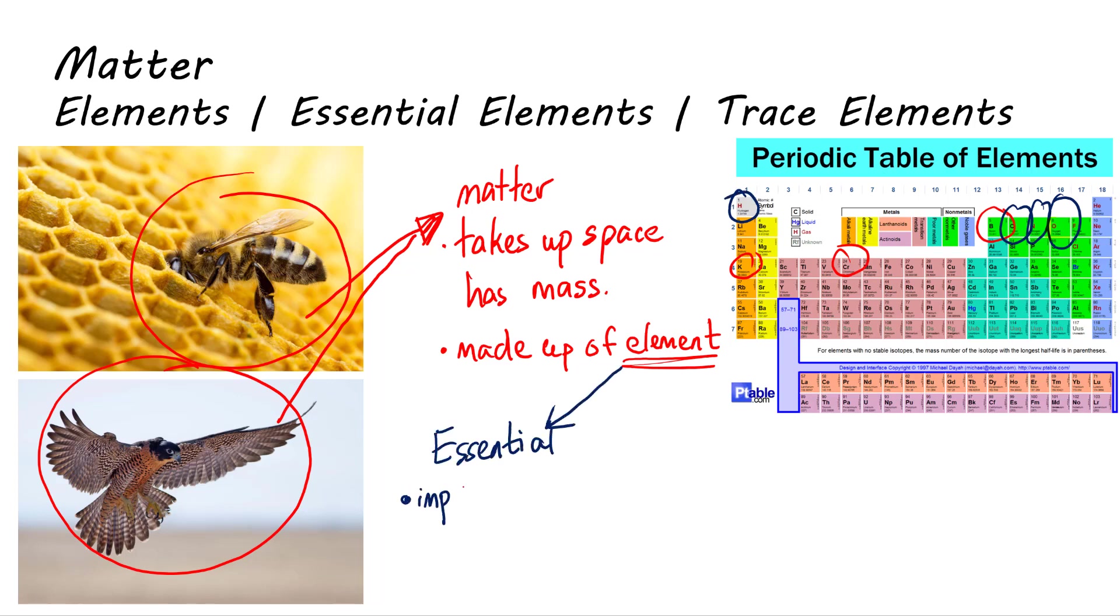We call these elements essential elements. About 96% of the human body is made of the four essential elements: carbon, hydrogen, oxygen, and nitrogen. If the elements are only needed in very small amounts of quantity but are still important for living organisms, we call these elements trace elements. Examples of trace elements are iron and iodine.